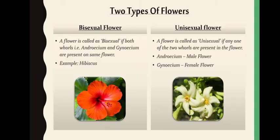Moving on to different types of flowers based on whether they contain androecium, gynoecium, or both. If a flower contains both sexes — androecium and gynoecium together — as in hibiscus, it is called a hermaphrodite or bisexual flower. If only androecium is present, it is called a male flower, as in papaya. If only gynoecium is present, it is called a female flower. Both male and female flowers are called unisexual — 'uni' meaning one, indicating only one type of sex is present.